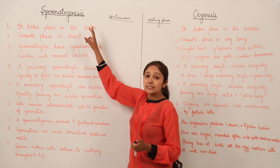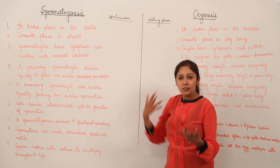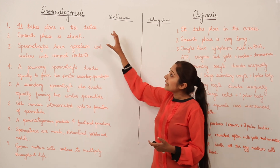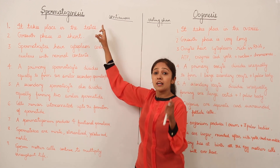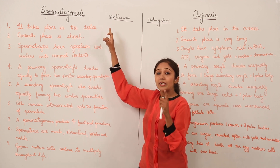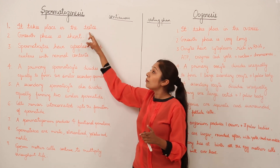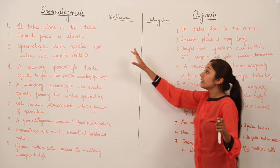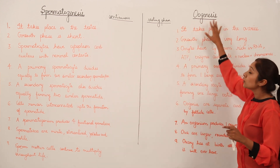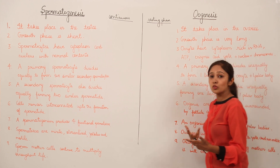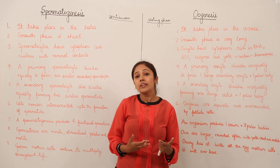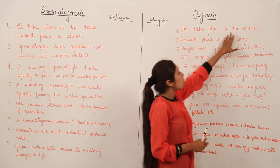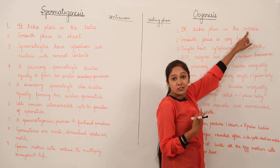Point one: spermatogenesis takes place in the testes. Spermatogenesis means the formation of sperms, which are the male gametes, so they are formed in the male gonads, that is the testes. In oogenesis, which is the formation of ova or egg — the female gamete — it takes place in the ovaries, which are the female gonads.